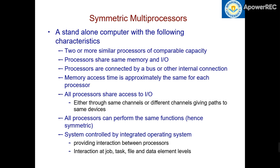Now, what are the primary characteristics? The first one is two or more similar processes of comparable capacity, meaning the capacity of these processes are similar if not same. Number two, the processes share the same memory and IO. That means the memory is shared among the processes, and these processes are connected via bus or any other internal connection, and the memory access time is approximately the same for all these processes.